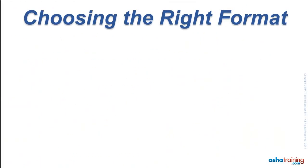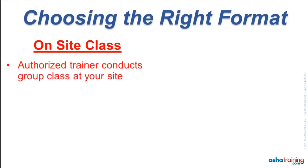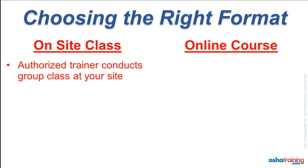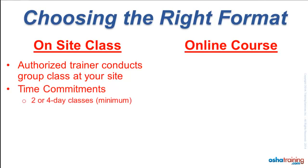There are two formats available for taking OSHA 10 and 30-hour courses through our company. The first is on-site classes, where you schedule a time for our OSHA authorized trainer to come to your site and conduct a class for your group. On-site OSHA 10-hour classes are typically spread over two days and 30-hour courses are usually spread over four days, because OSHA limits the maximum training time to no more than seven and one-half hours on any given day, plus additional time for breaks.